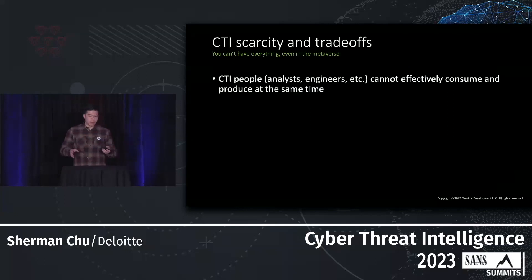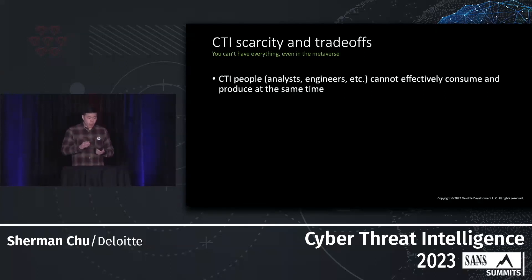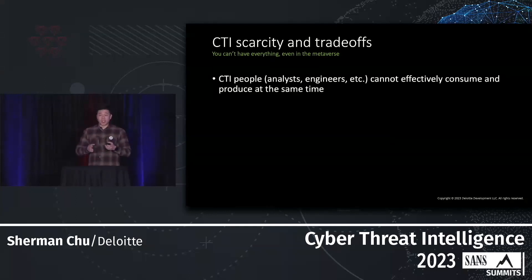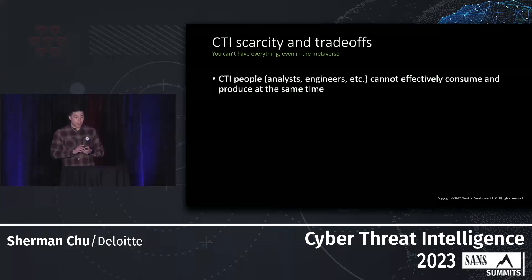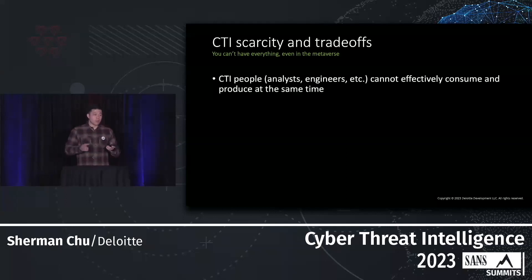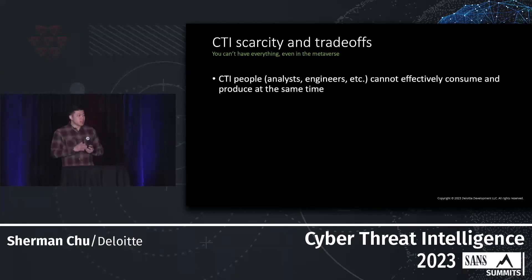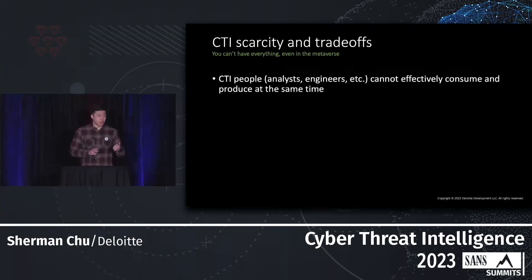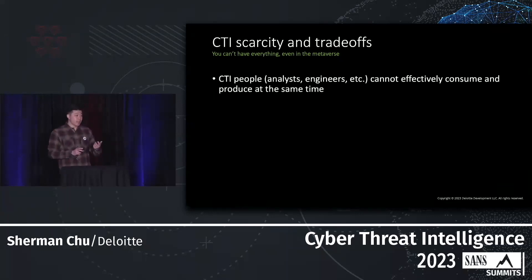Looking at high-level trade-offs across people, process, and technology: one key point to emphasize is that people cannot effectively consume and produce simultaneously. The processes surrounding each differ greatly. Some technologies can do both, but require heavy tuning. As an organization, start lean on one side unless you're a multi-billion dollar organization that can spin up two teams. I'd also argue consumption is harder than production, because it requires you to understand your own attack surface and the defensive courses of action you can take.